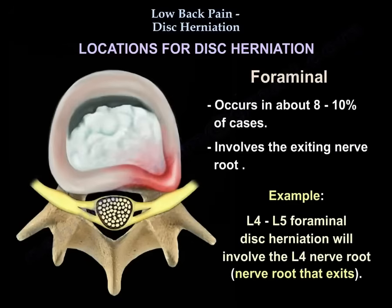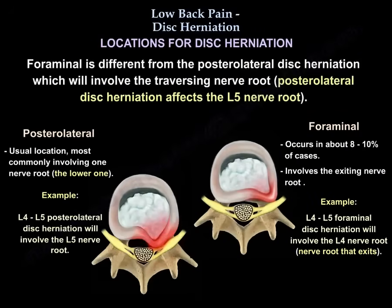The second location of disk herniation is foraminal. It occurs in about 8 to 10% of cases and involves the exiting nerve root. For example, an L4-L5 foraminal disk herniation will involve the L4 nerve root — the nerve root that exits at L4. This is different from posterolateral disk herniation, which involves the traversing nerve root. In the case of L4-L5, the posterolateral disk herniation will involve the L5 nerve root, the traversing nerve root.